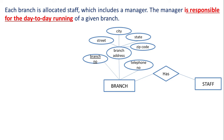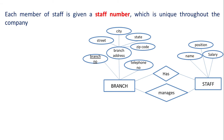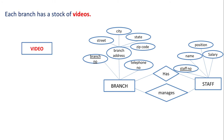We shall name the relationship as 'branch has staff.' The manager is responsible for the day-to-day running of a given branch, so there is one more relationship between staff and branch — we shall name it 'manager manages branch.' The data held on a member of staff is his or her name, position, and salary. Name, position, and salary are attributes of the entity staff. Each member of staff is given a staff number which is unique throughout the company, making it the primary key for staff.